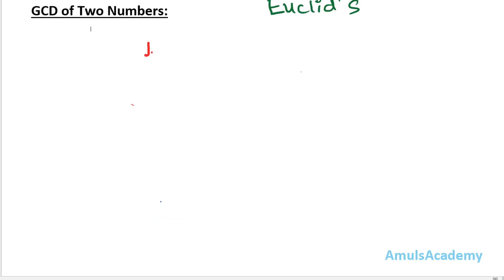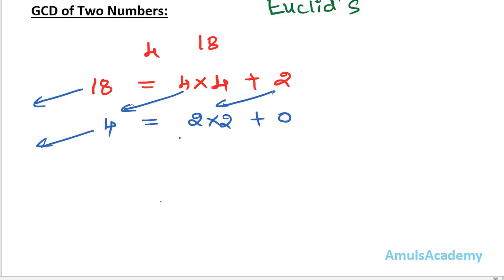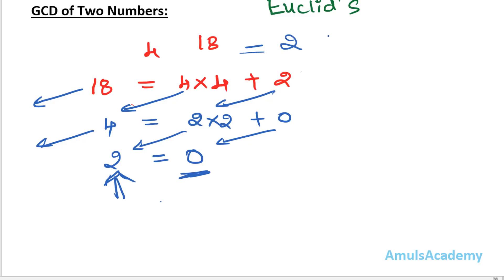Let's take another example: 4 and 18. The bigger value is 18, so we write 18 = 4 × 4 + 2, giving remainder 2. Next, 4 = 2 × 2 + 0, giving remainder 0. When we get 0, that means 2 is the GCD of 4 and 18. This is the method to find the GCD of two numbers.